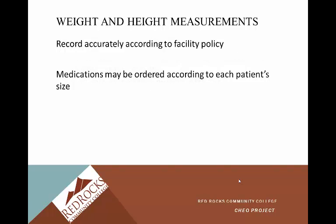You're going to record accurately according to facility policy. It's really important that it's accurate because changes in weight are going to be used by health care providers to determine course of action. If they've lost too much weight, are they going to make dietary changes or add a supplement? Making sure you get an accurate weight gives the health care team a good picture of what the weight is compared to the patient's overall health. Medications may also be ordered according to each patient's size — especially in pediatrics, medications are weight-specific.